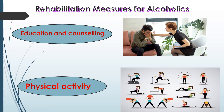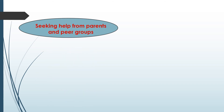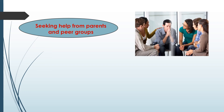The next measure is physical exercise. Alcoholics undergoing rehabilitation should be channeled into healthy activities. They should engage in activities like reading, music, sports, yoga, and meditation. Next measure: seeking help from parents and peer groups. Peer groups means same age groups. When a problematic situation occurs, the affected individual should seek help and guidance from parents and peer groups. This helps them share their feelings of anxiety and wrongdoing and get rid of the habit.